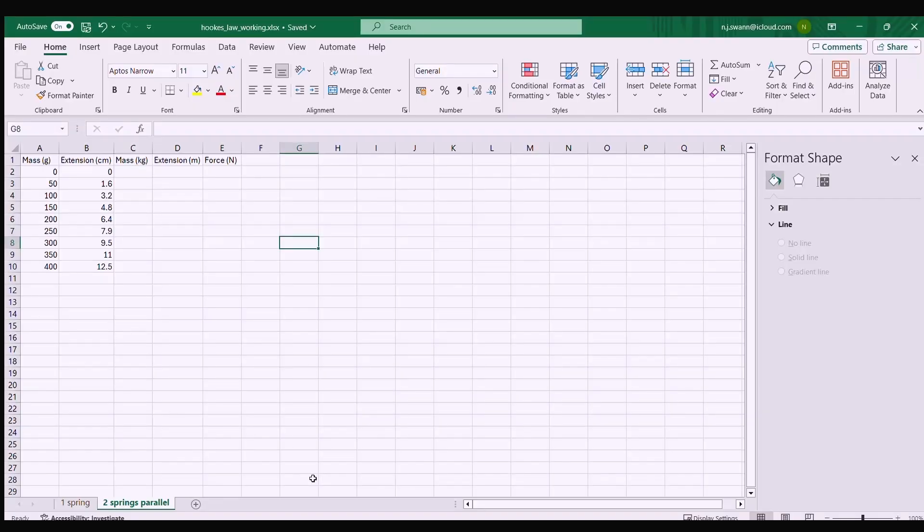Here's my data set for Hooke's Law with two springs in parallel. I've got my mass in grams in column A, my extension in centimeters in column B. First off I need to convert everything into SI units so to get from grams into kilos I need to divide the mass in grams by 1,000. To get my extension in meters I need to divide my extension in centimeters by 100 and I can copy these down.